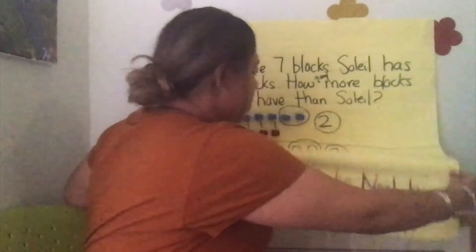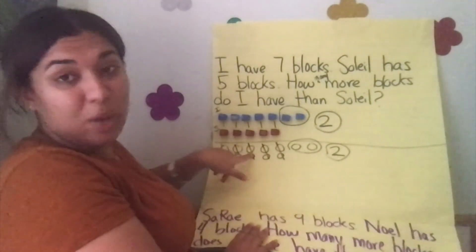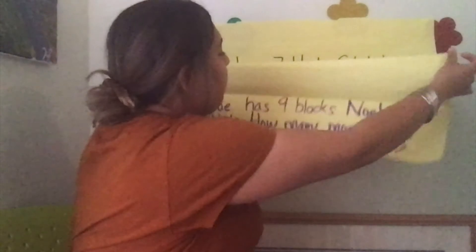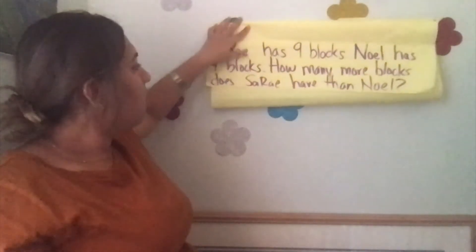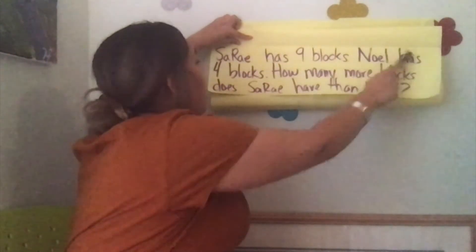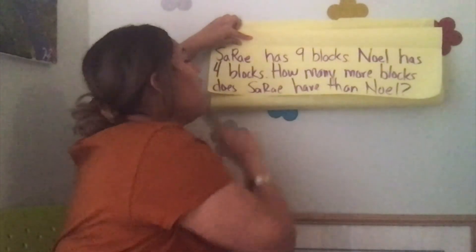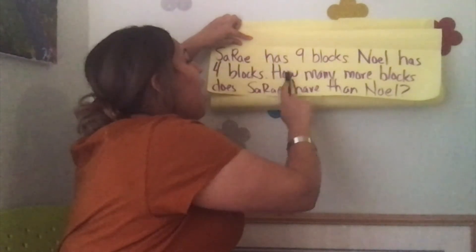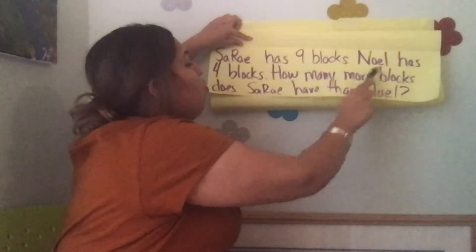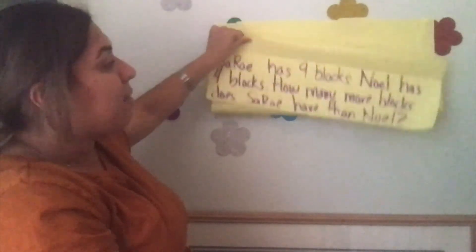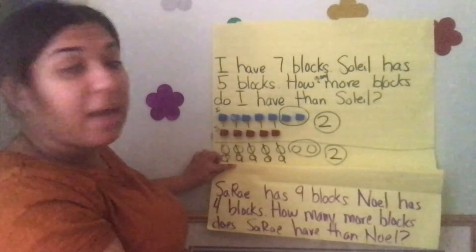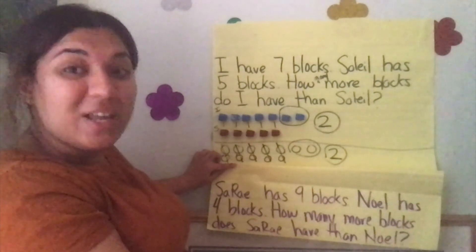Let's go ahead to the story problem that you are going to solve on your own. Remember it's going to be similar to the way we solved here — same strategy, new numbers. So Ray has nine blocks. Noel has four blocks. How many more blocks does So Ray have than Noel? Make sure you solve it like we did: line up your cubes and cross out your circles. Good luck, friends. I can't wait to see your hard work. Bye bye.